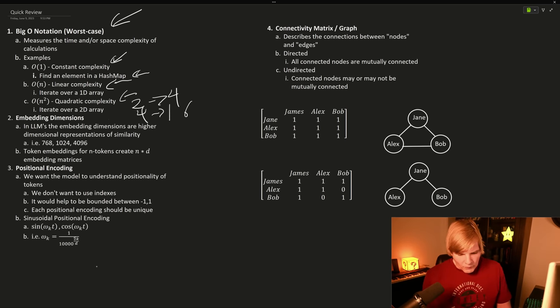Then we need to remember embedding dimensions, where embedding dimensions are higher dimensional representations of similarity. A lot of embedding dimensions are 768, 1024, or 4096 dimensions.